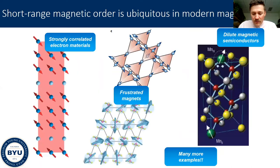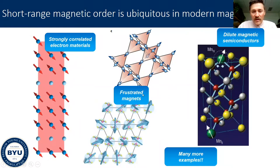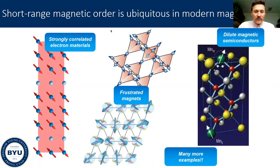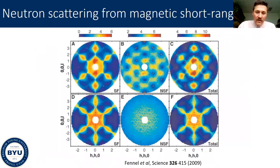These short-range correlations have shown up in a number of different contexts in condensed matter physics — really all over the place. We see them in strongly correlated electron materials. Very famously, we see them in geometrically frustrated magnets. We also see them in functional materials like dilute magnetic semiconductors or thermoelectrics, as I hope to talk about today if we have time, and many additional examples where short-range magnetic correlations are important for the physics and observed properties of a variety of different material systems.